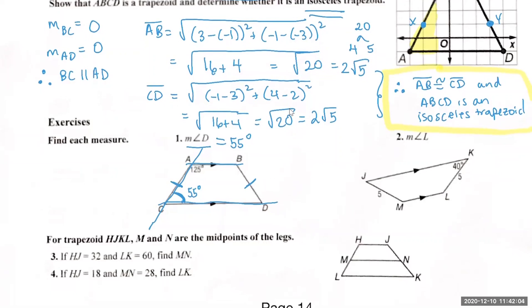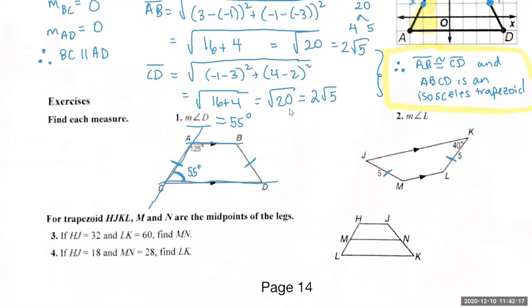In question two, we have another isosceles trapezoid — we know because the legs are both 5. Can you find the measure of angle L? It's a same-side interior angle, so 140 — double check that it adds up to 180.